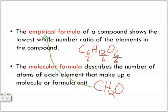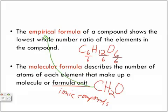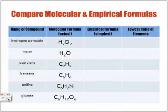I'm going to show you a set of examples — you should have them in your notes. The molecular formula describes the number of atoms of each element that make up the molecule or formula unit. Remember what we said about formula units? We're referring to ionic compounds.